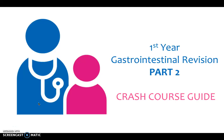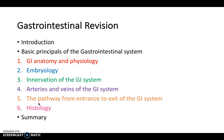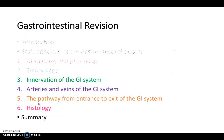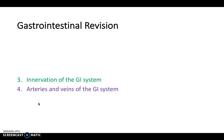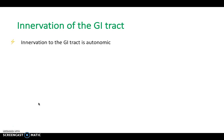Hello and welcome back to Crash Course. Today we're going to be continuing to look at the GI system. In the previous video we looked at the anatomy, physiology, and embryology of the GI system. In the next video we're going to look at the pathway from mouth to anus and the histology. But in this video we're going to be looking at the innervation and vasculature of the GI system. So let's start with innervation.